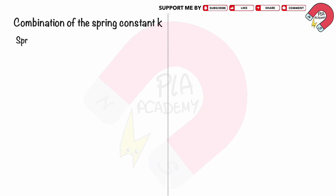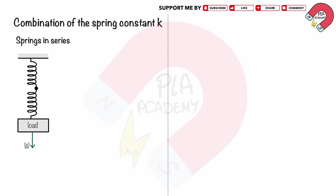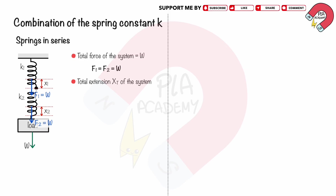Combination of the spring constant K. Springs in series: consider two springs connected in series. Let the spring constants of the individual springs be K1 and K2. A load of weight W is hung from the bottom of the combined spring system. This weight exerts the same force W on both springs, so the total force on the system is also W, and F1 equals F2 equals W. The force W causes each spring to extend — spring 1 by X1 and spring 2 by X2. The total extension XT of the system is the sum of these individual extensions: XT equals X1 plus X2.